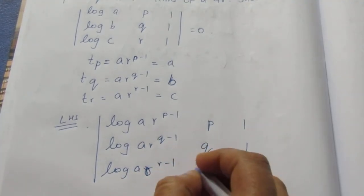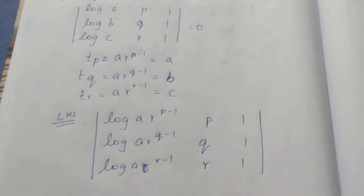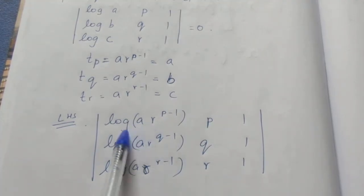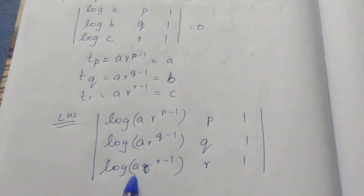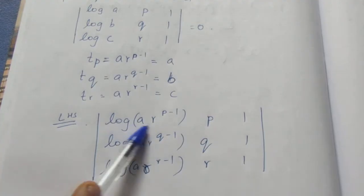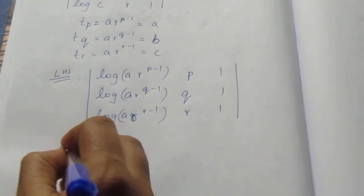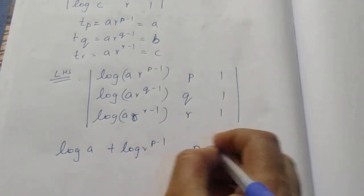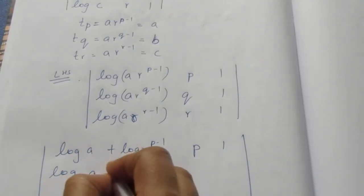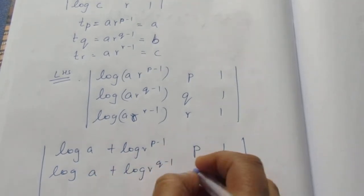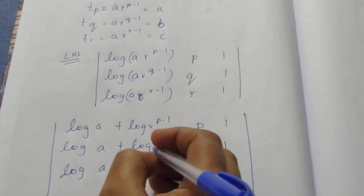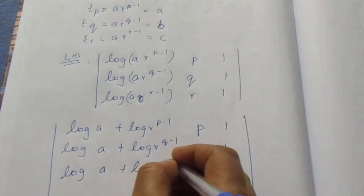Taking LHS and substituting: log A = log(a·r^(P−1)) = log a + (P−1)·log r. Similarly, log B = log a + (Q−1)·log r, and log C = log a + (R−1)·log r.